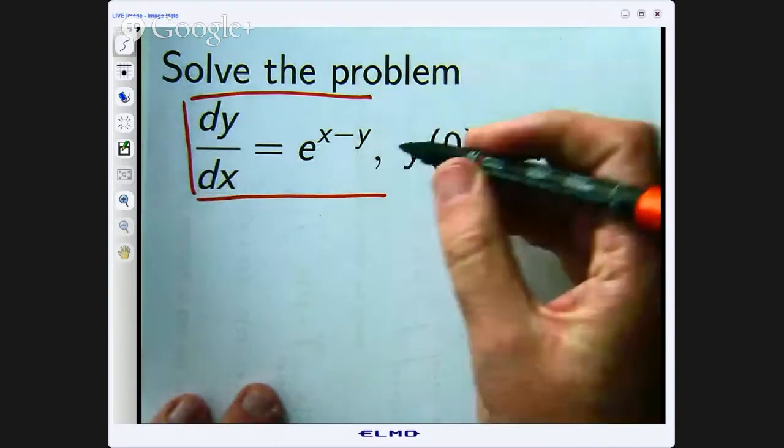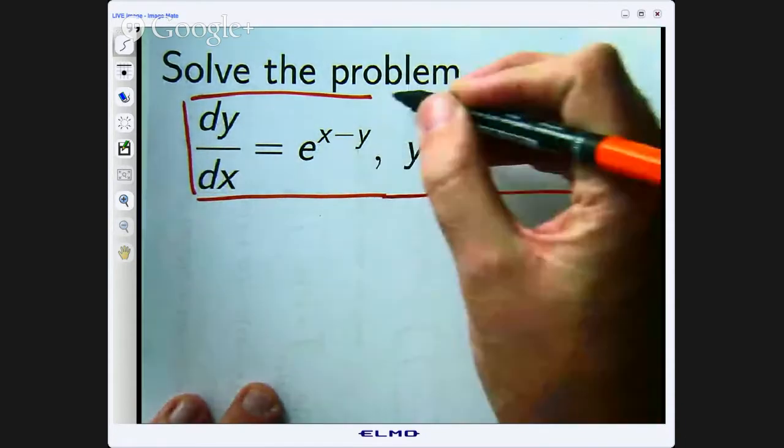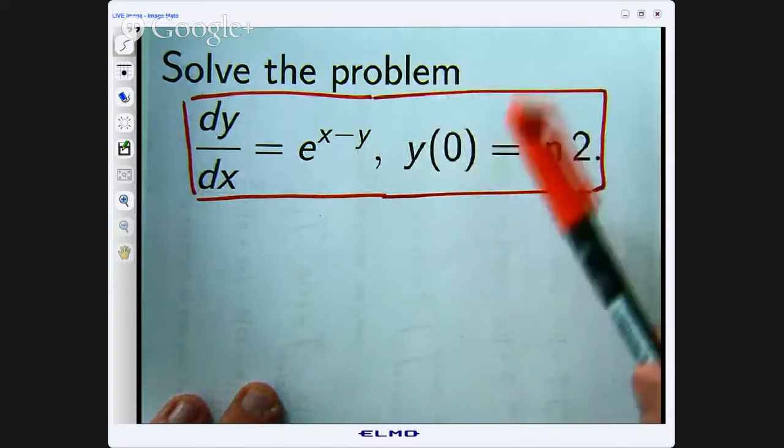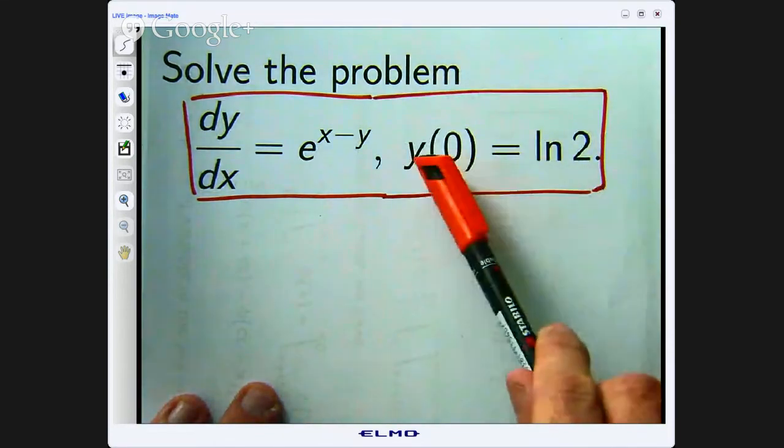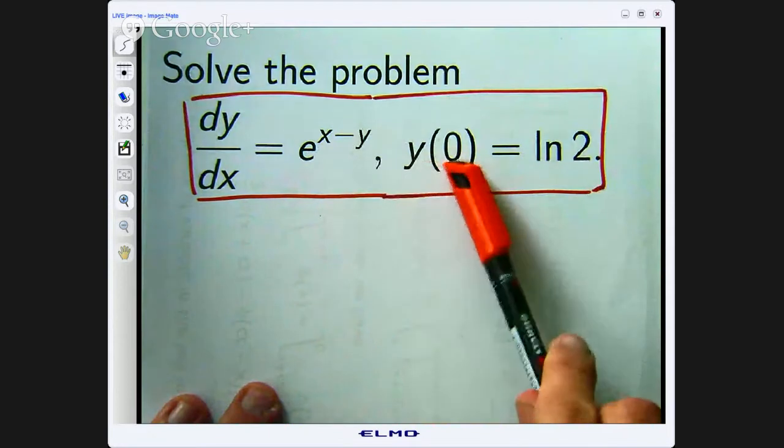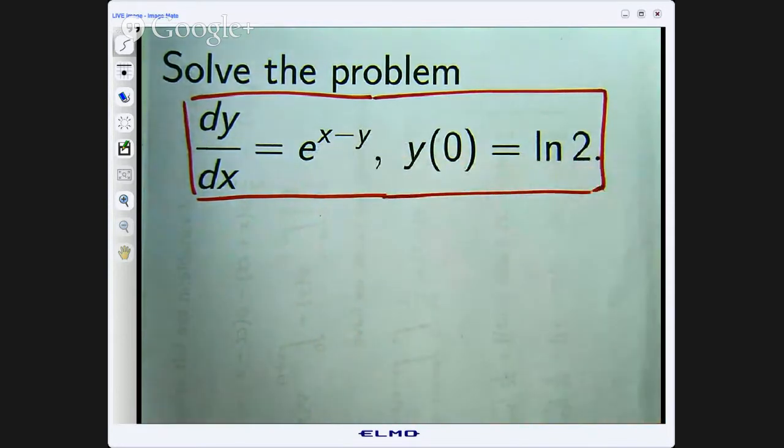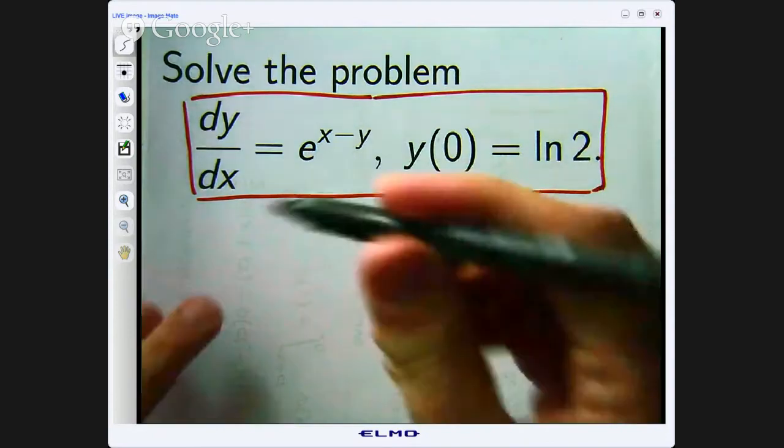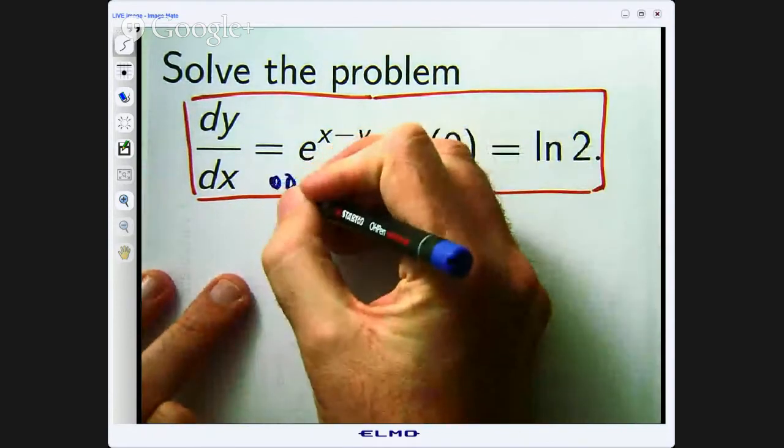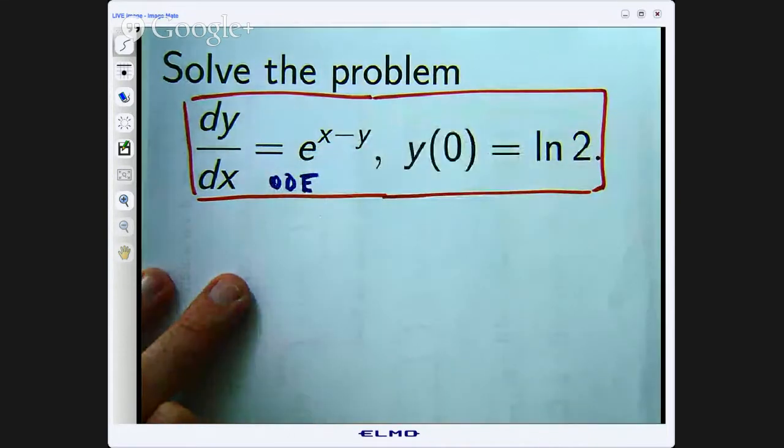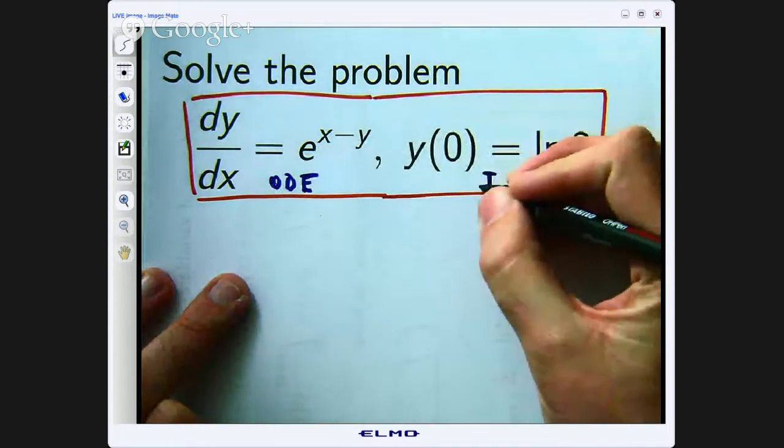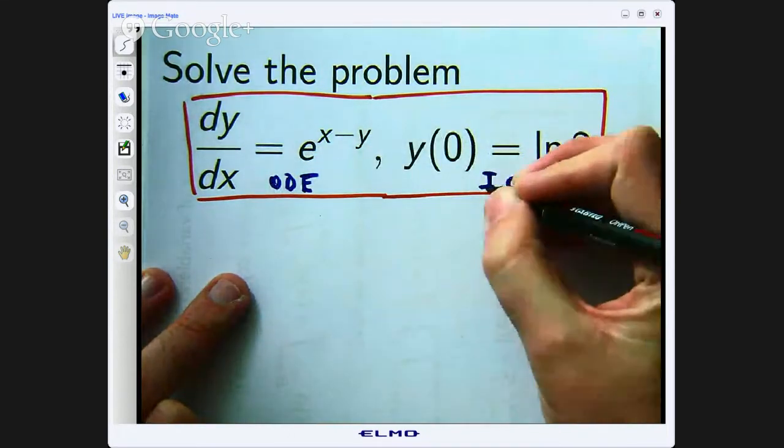Over here we have a little bit more information. We know the value of the solution to this at x equals 0 and the value of y at x equals 0 is the natural log of 2. So this is like an ODE or an ordinary differential equation combined with an initial condition.